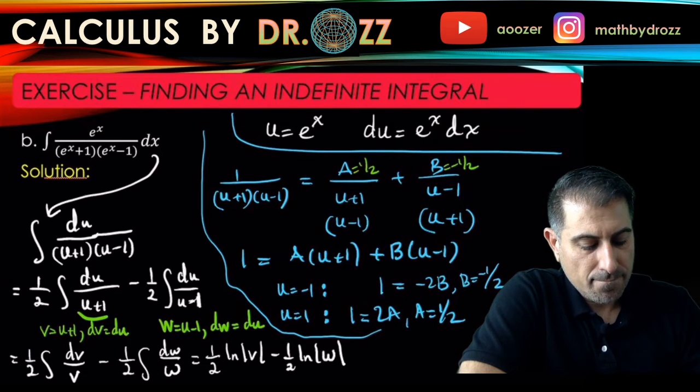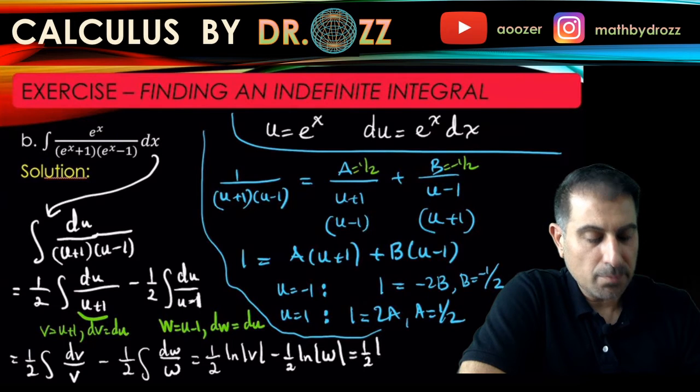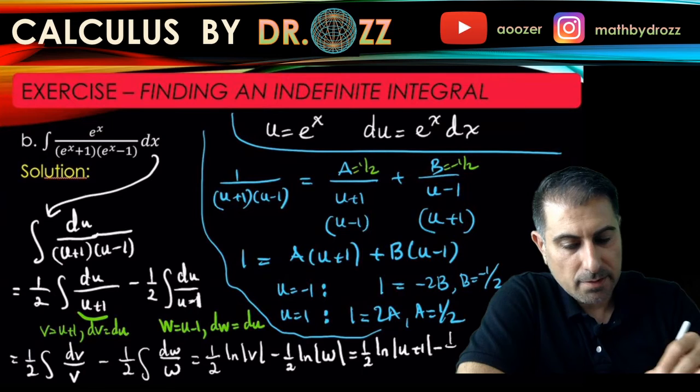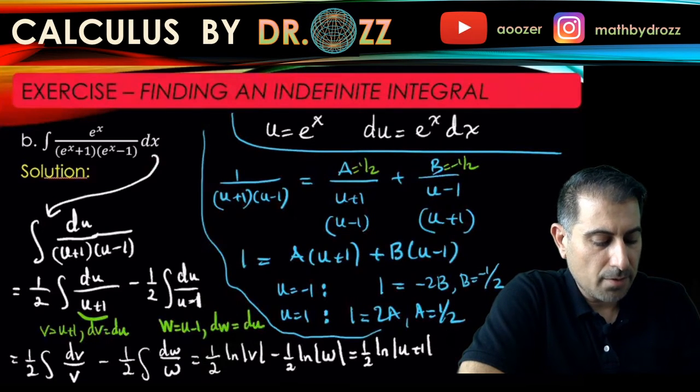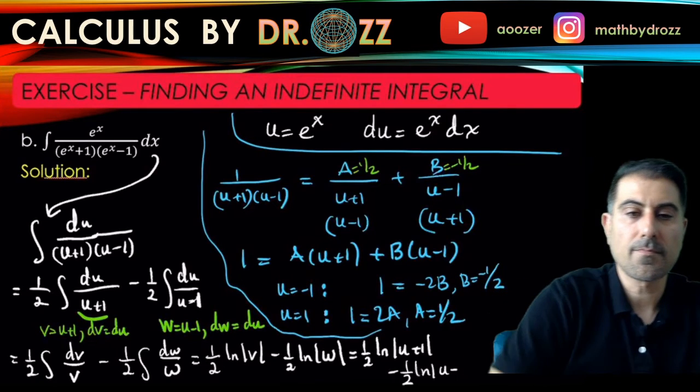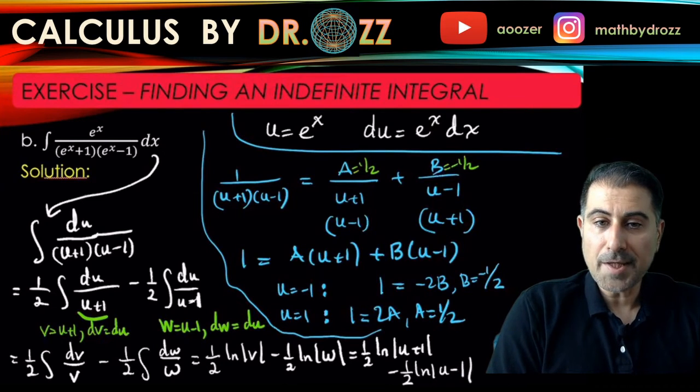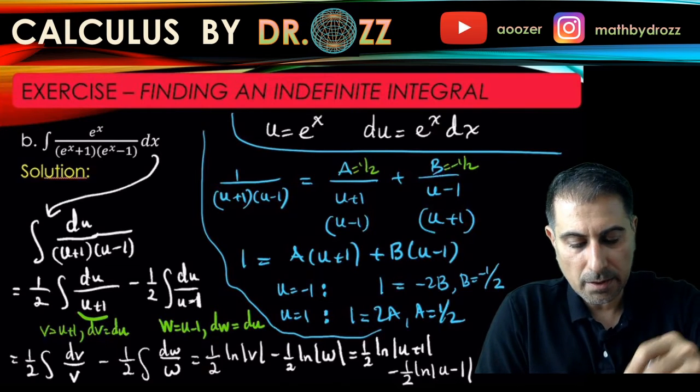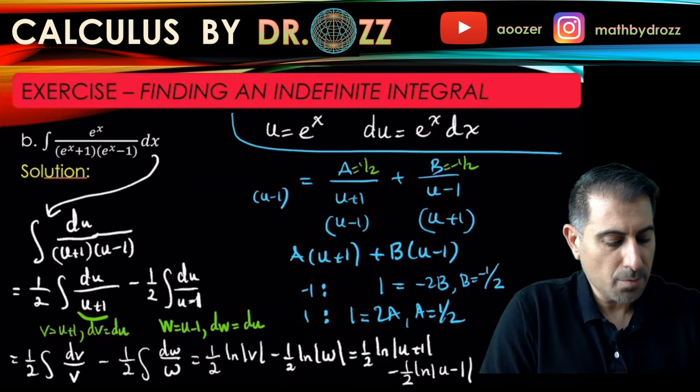Alright, 1/2 ln|u+1| minus 1/2 ln|u-1|. Alright, we're not done yet because we have to back-substitute u. Let me clean this part, so you don't need this part anymore.